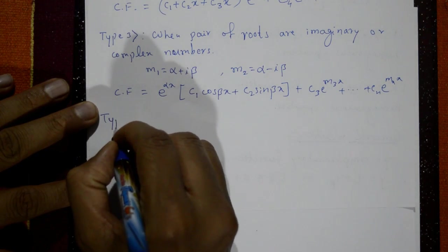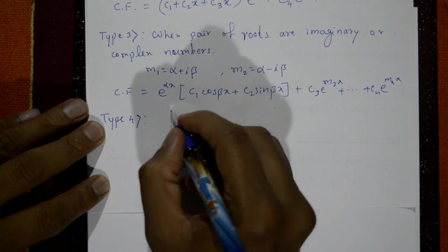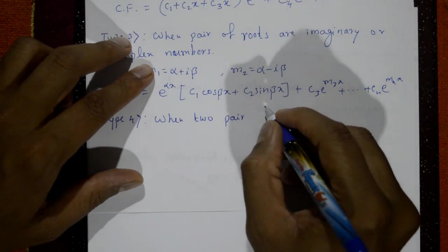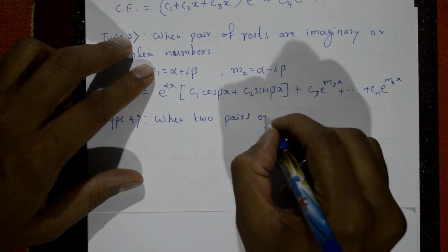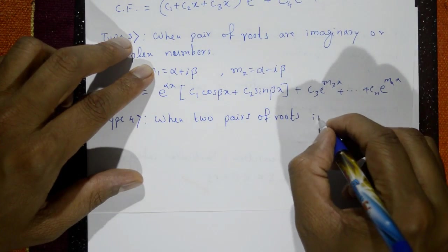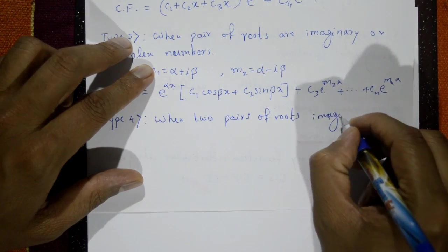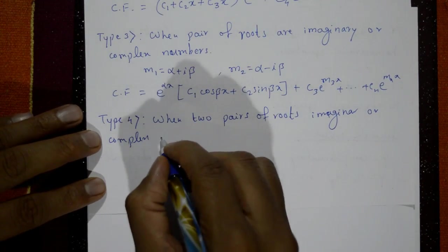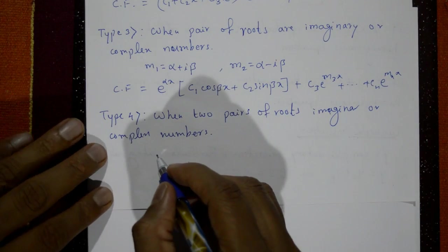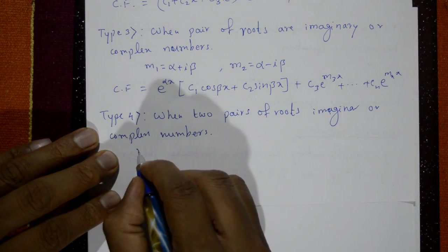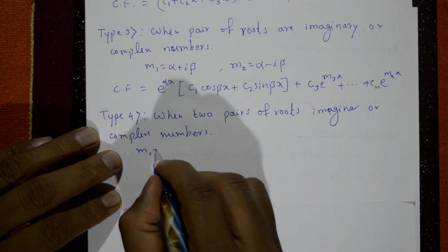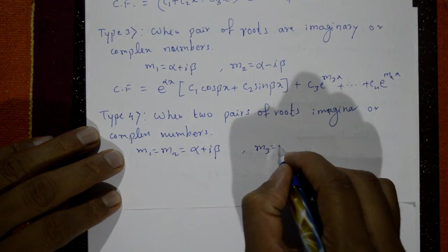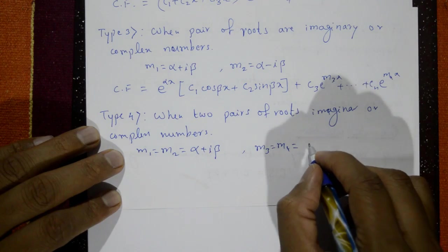Type 4: when there are two pairs of imaginary or complex roots. The roots are m1 and m2 both equal to α + iβ, and m3 and m4 both equal to α − iβ.